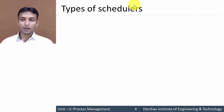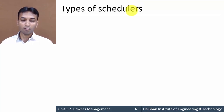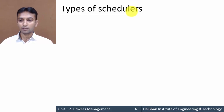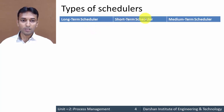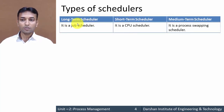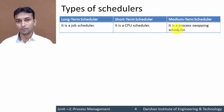Next, we look at different types of schedulers. There are mainly three types: long-term scheduler, short-term scheduler, and medium-term scheduler. The long-term scheduler is also known as the job scheduler. The short-term scheduler is also known as the CPU scheduler. The medium-term scheduler is also known as the process swapping scheduler.